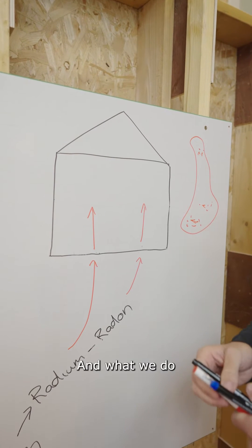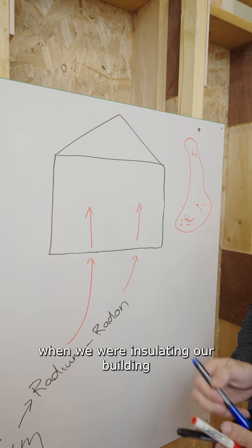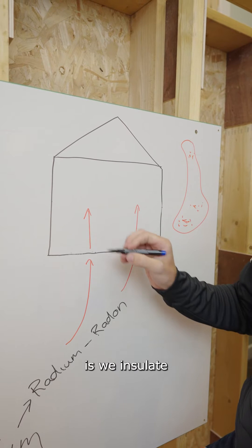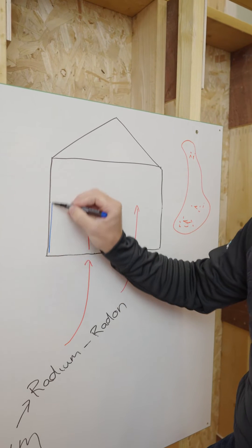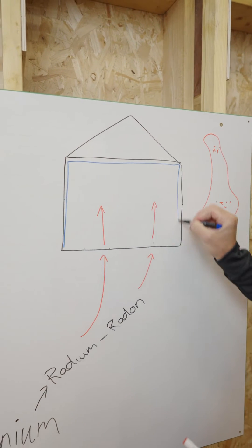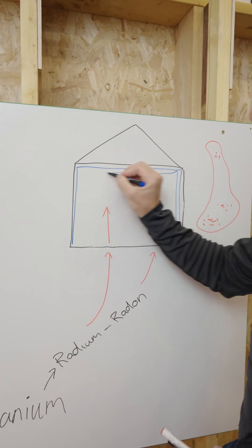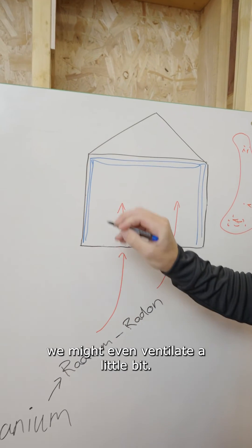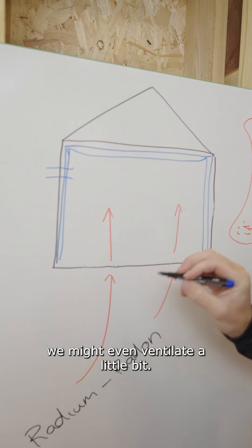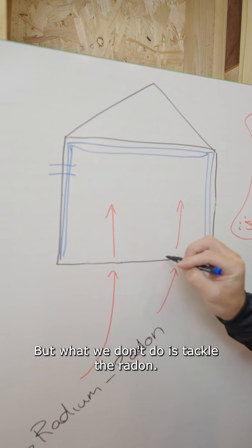And then what we do when we're insulating our building and doing all our air tightness is we insulate, we airtight, we might even ventilate a little bit but what we don't do is tackle the radon.